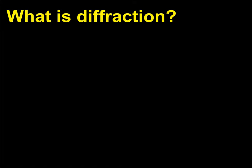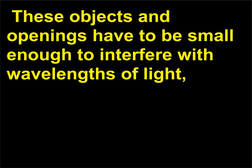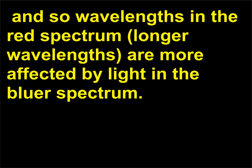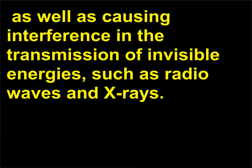What is diffraction? Diffraction is the phenomenon of how light bends around small objects or through small openings. These objects and openings have to be small enough to interfere with wavelengths of light. Wavelengths in the red spectrum (longer wavelengths) are more affected than light in the bluer spectrum. Diffraction can cause a blurring of light, as well as interference in the transmission of invisible energies such as radio waves and X-rays.